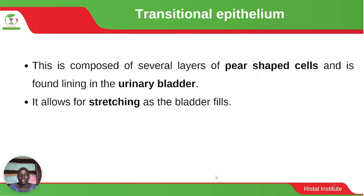Then we have the transitional epithelium, which is composed of several layers of pear-shaped cells and is found lining the urinary bladder. It allows for stretching as the bladder fills, being elastic in nature, so it can accommodate urine.